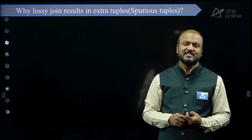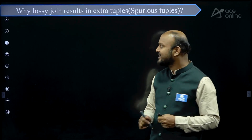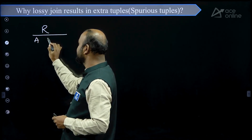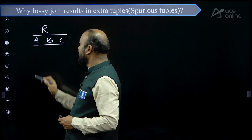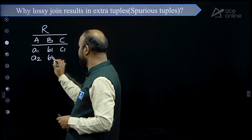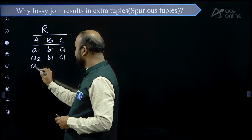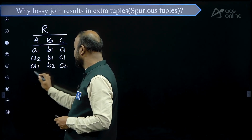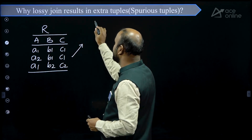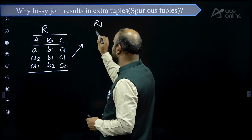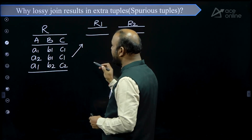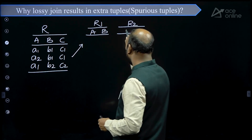Here we will understand this concept very clearly with a simple example. Let us say we have some relation R having three attributes A, B, and C, having some tuples: A1, B1, C1; A2, B1, C1; A1, B2, C1. This is a relation. Suppose this relation is decomposed into R1 and R2, meaning it is decomposed into two tables, where R1 is (A, B) and R2 is (A, C).